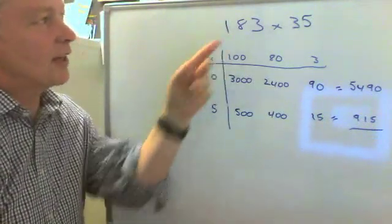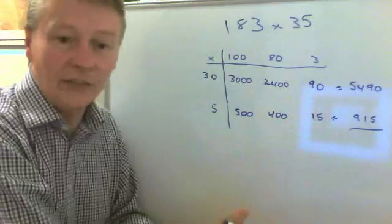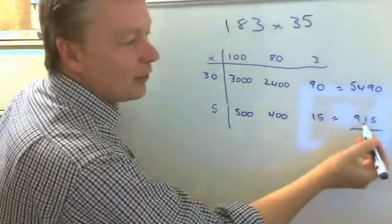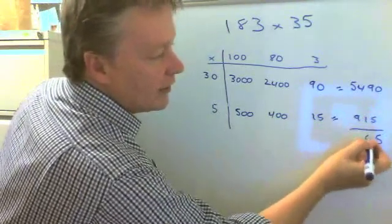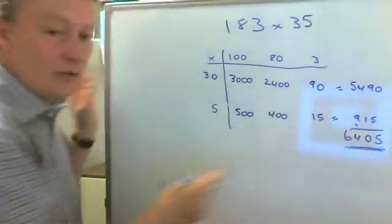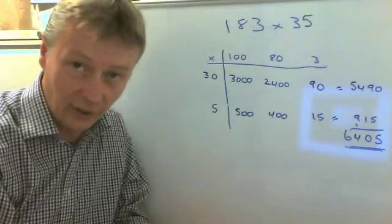So in order to calculate 183 multiplied by 35, I now just add those two numbers together. So 5,490 plus 915 is... I want to carry... 6,405. And that will give me my calculation.